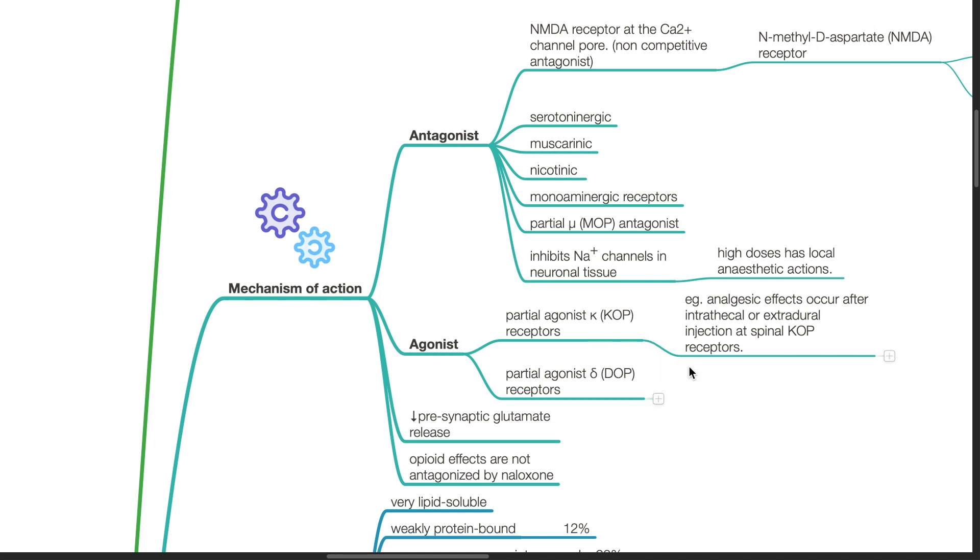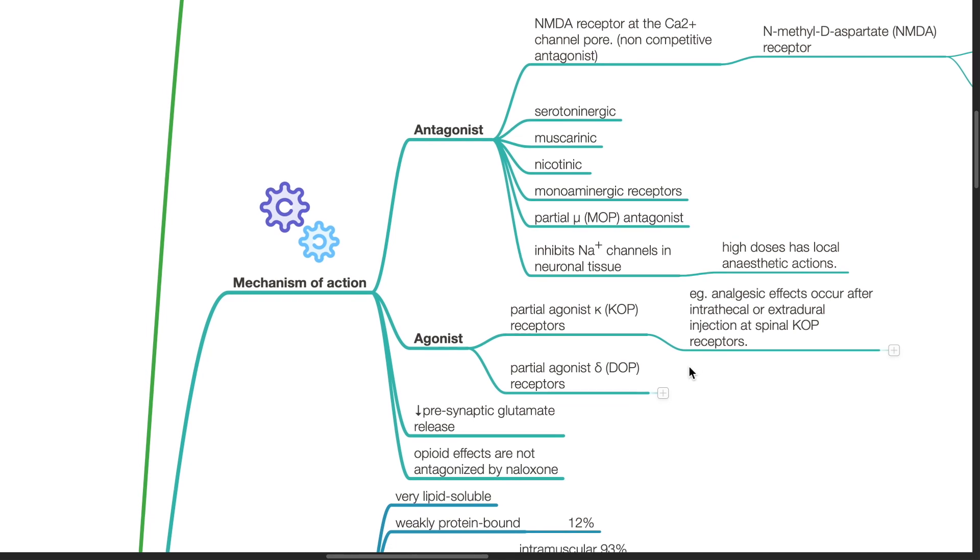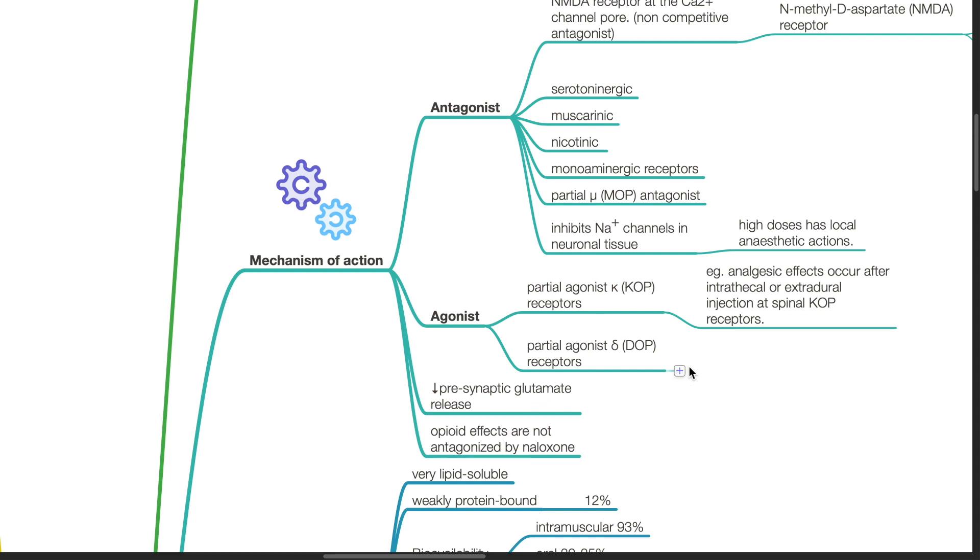Analgesic effects occur after intrathecal or extradural injection at spinal KOP receptors. Ketamine reduces presynaptic glutamate release. Opioid effects of ketamine are not antagonized by naloxone.